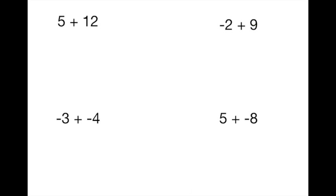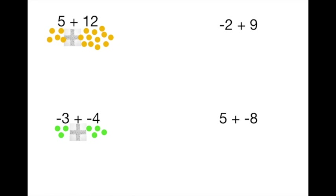For addition problems, groups meet at a crossroads. If you have the same kinds of groups meeting, you wouldn't expect anything bad to happen. In the top problem, five soldiers meeting with twelve soldiers gives you seventeen soldiers. On the bottom, three thieves meeting with four thieves gives you seven thieves. There's no reason for signs or allegiance to change — it's just a matter of counting who's there.